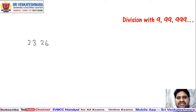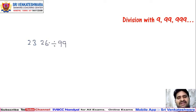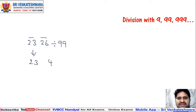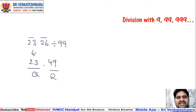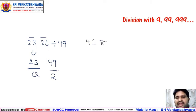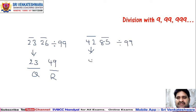Now let's understand the 99 division cases. For 9 we take single digits; for 99 we take two digits at a time. For example, 2326 divided by 99: split into two-digit groups — 23 and 26. Directly write 23, then 23 plus 26 is 49. So 23 is the coefficient and 49 is the remainder. Next, 4285 divided by 99: write 42, then 42 plus 85 is 127.